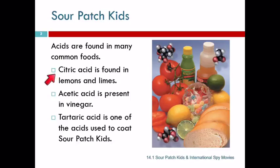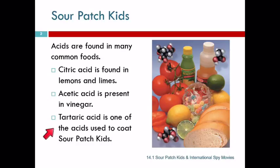Citric acid is found in lemons and limes, acetic acid in vinegar, tartaric acid is one of the acids that they use to make Sour Patch Kids so sour. Personally, I don't like sour things, but my kids eat those. Sourdough bread also has acid in it.